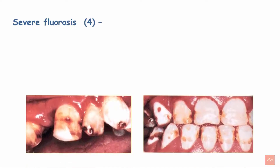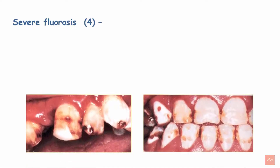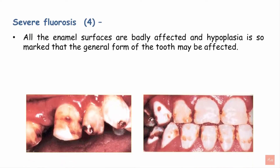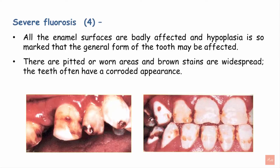Score 4 represents severe fluorosis. As seen in the image, all enamel surfaces are badly affected and hypoplasia is so marked that the general form of the tooth may be affected. There are pitted or worn areas, brown stains are more widespread than in score 3, and the teeth often have a corroded appearance, having lost their natural form.